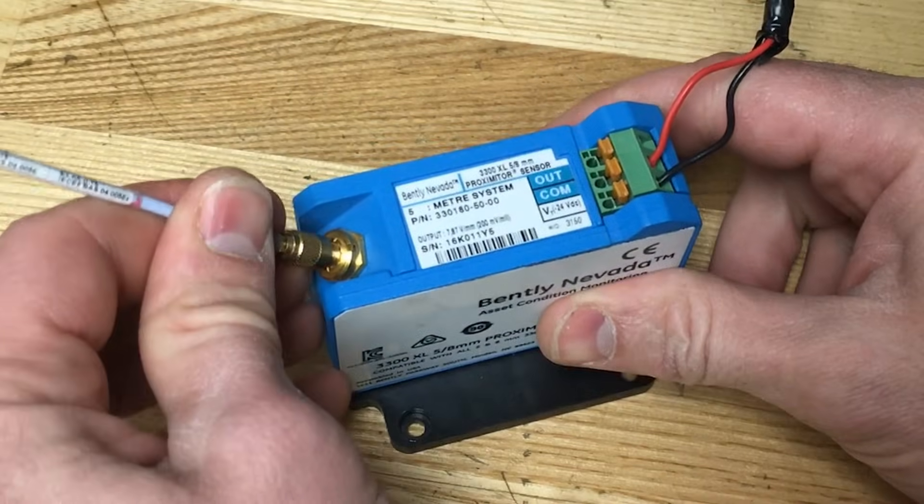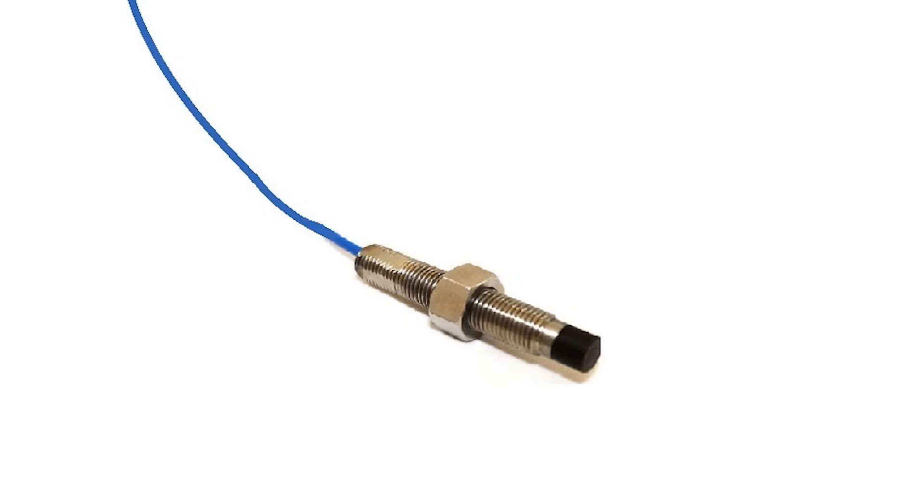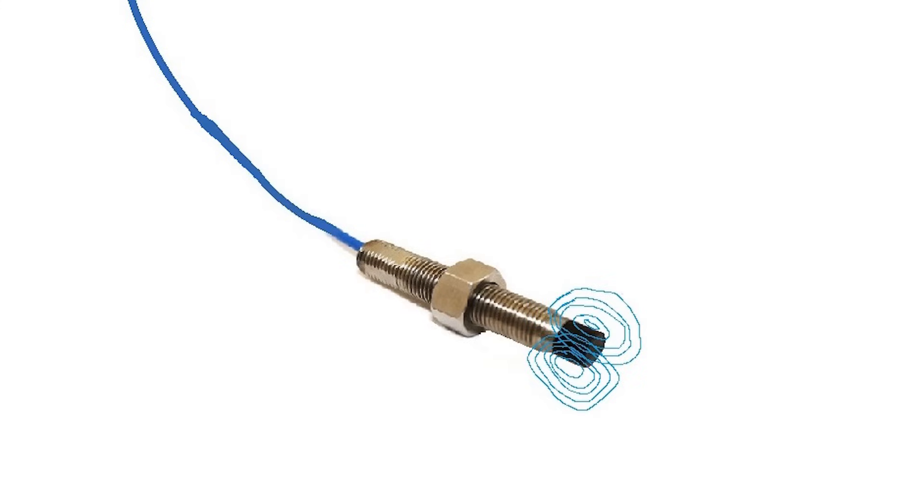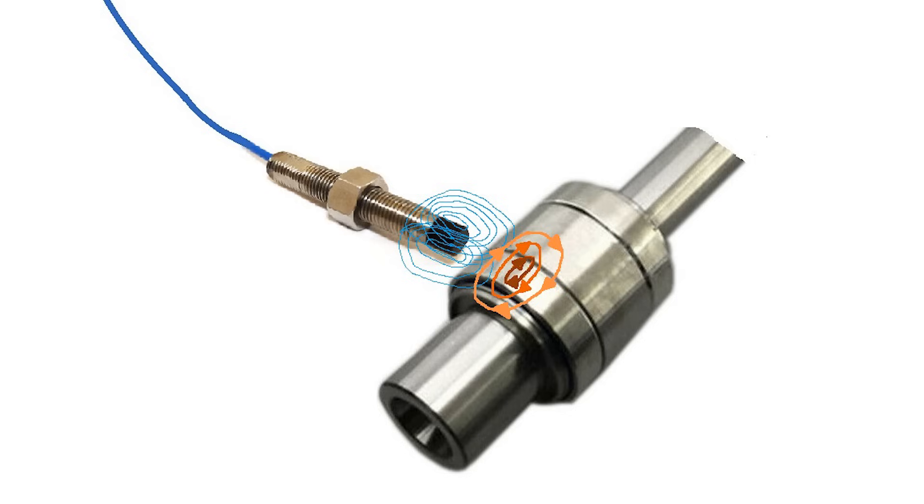The proximitor is responsible for providing an oscillating signal to the coil, which in turn produces a varying magnetic field. As metallic objects move into this field, induction occurs, forming eddy currents.